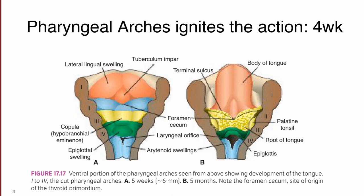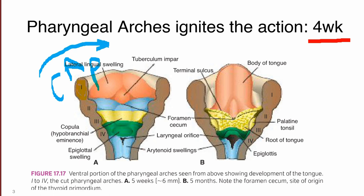In the adult tongue we can also see the median sulcus, which indicates the line of fusion between the bilateral aspects of the anterior two-thirds of the tongue. We will understand how the median sulcus and sulcus terminalis are actually being developed, and we will see some of the taste buds with their innervation.